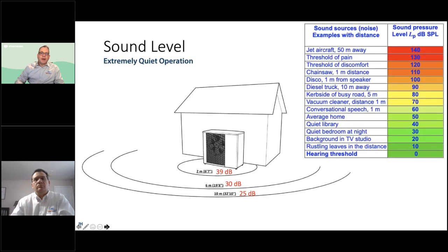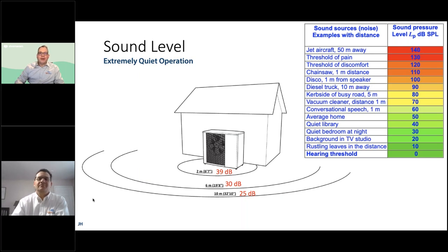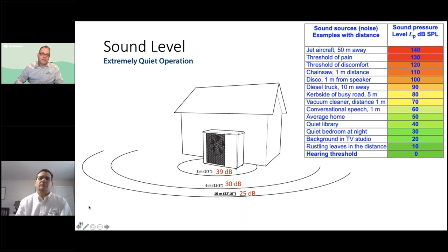On top of all that, it's super quiet. The way that ECM fan is designed, combined with the really large air coil outside, means even within about six feet from the unit you can barely hear it. A quiet library is about 40 dB, and this unit operates at around that level. The outdoor noise and traffic are probably louder than the unit, so it will not be disruptive at all as an outdoor unit compared to a lot of air source heat pumps.